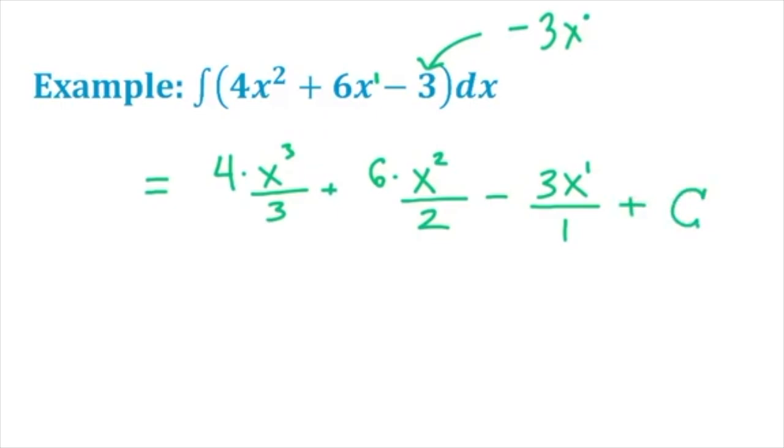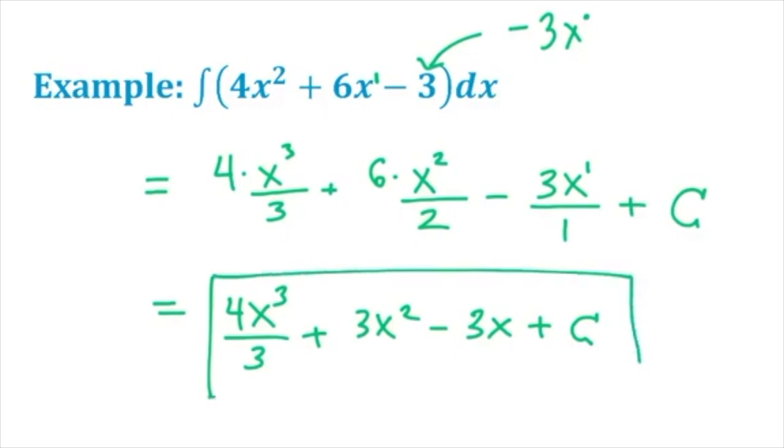I'll speak more to that in a minute. This looks a little funny so I'll take a brief second and rewrite this as 4x³/3 + 3x² - 3x + c. That would be our cleaned up antiderivative or integral in this case.